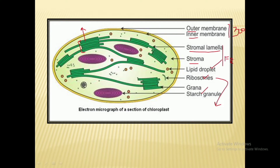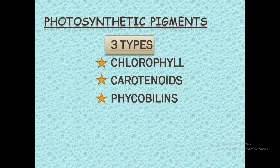These two grana are joined together by the help of stromal lamellae, whose other name is fret laminae (F-R-E-T). So now let us look at the photosynthetic pigments. The three photosynthetic pigments are chlorophyll, carotenoids, and phycobilins.